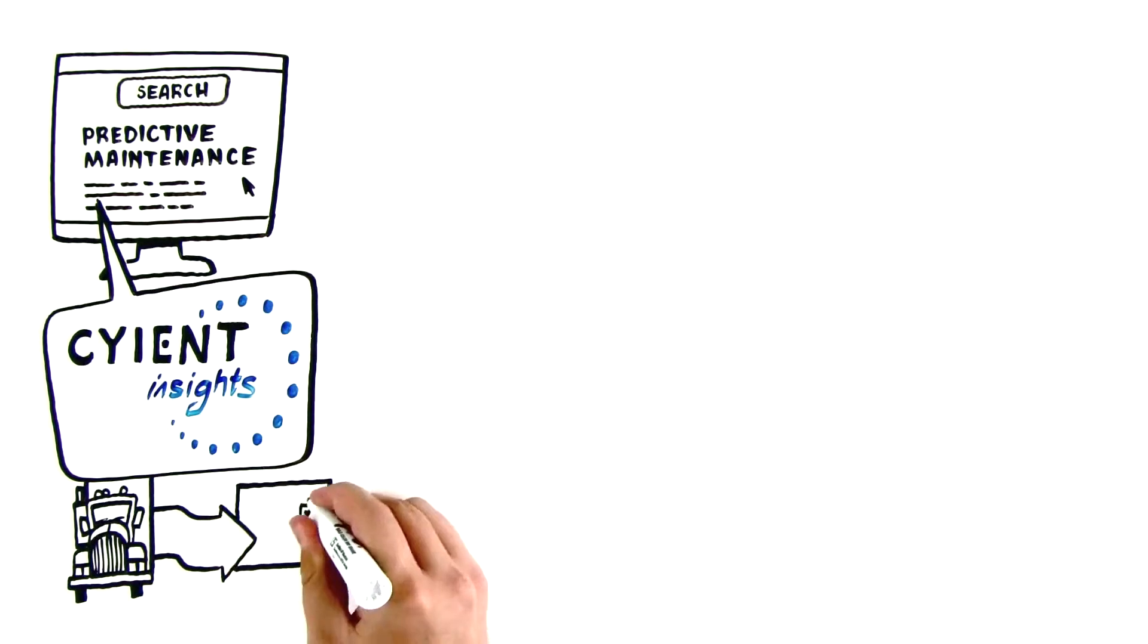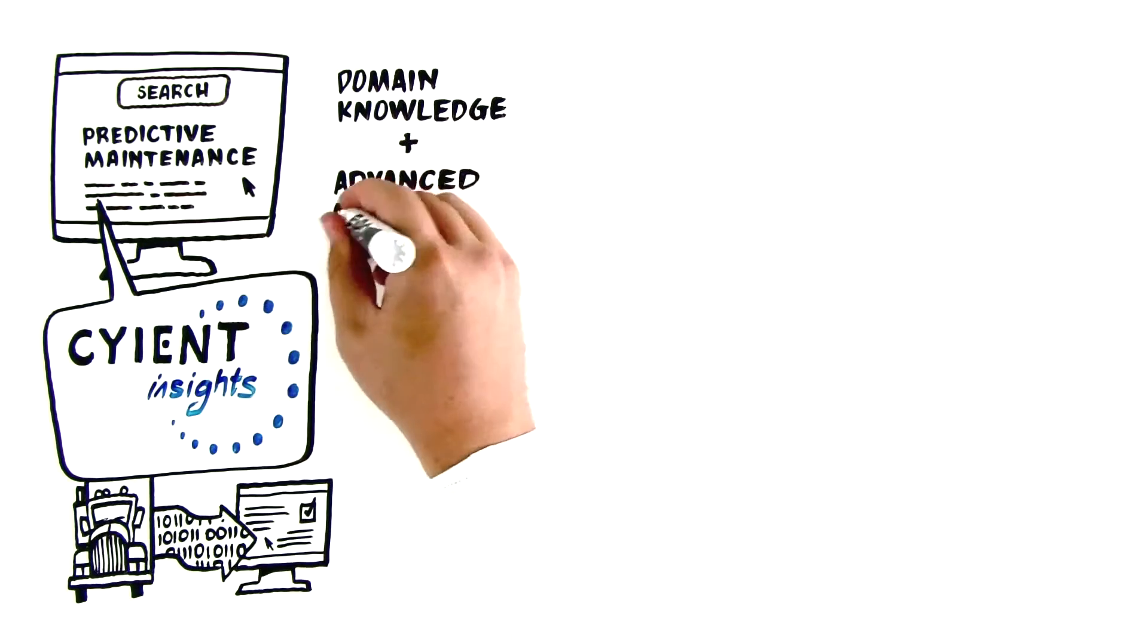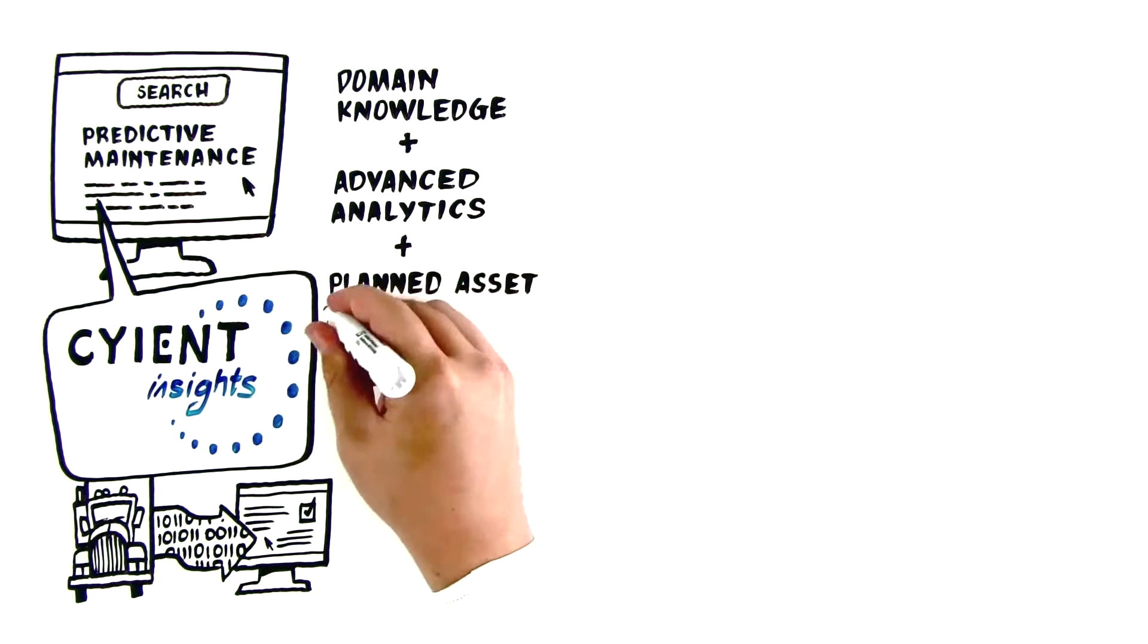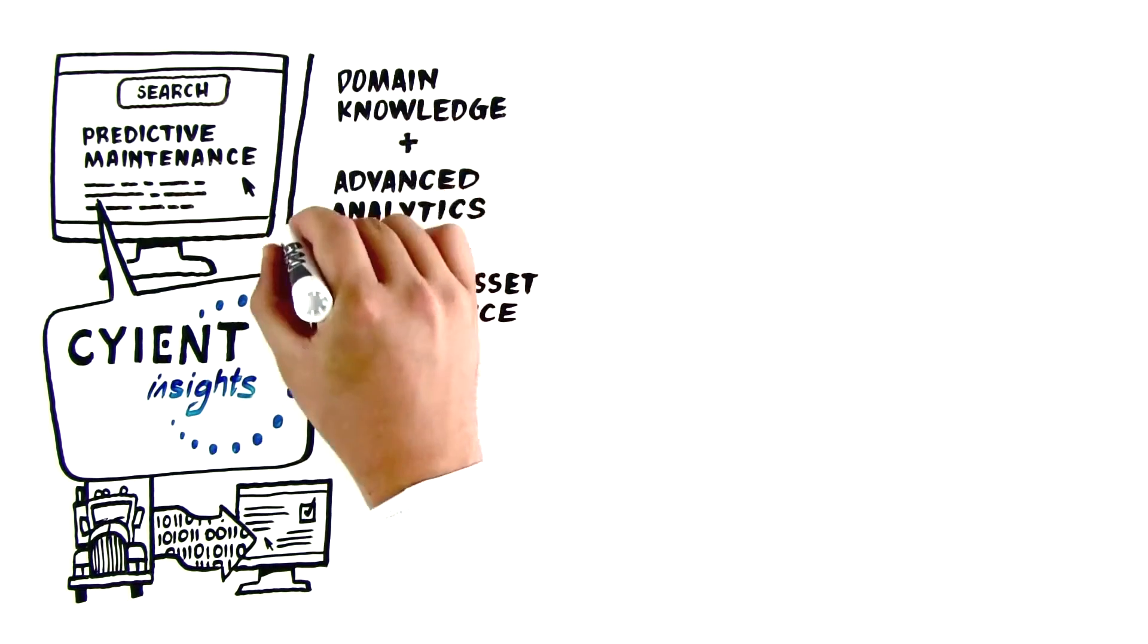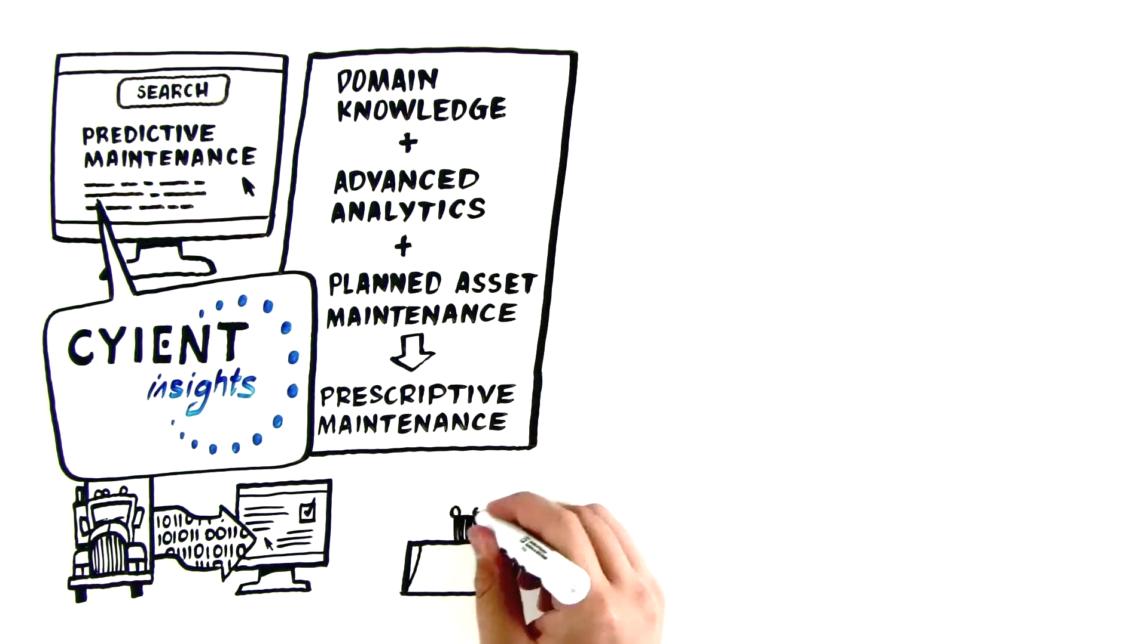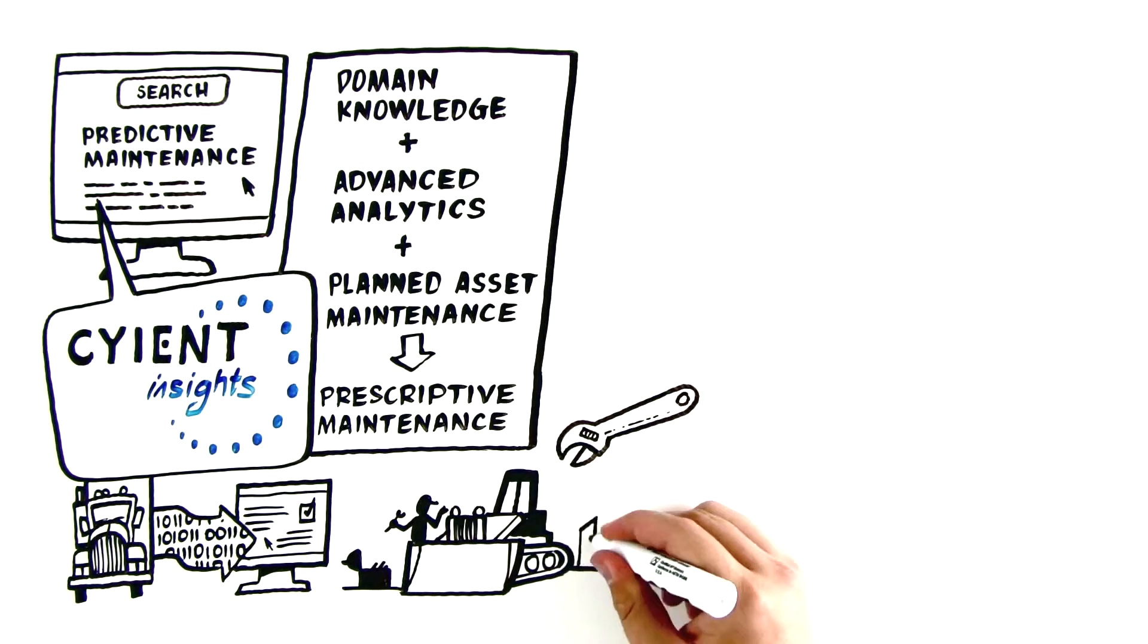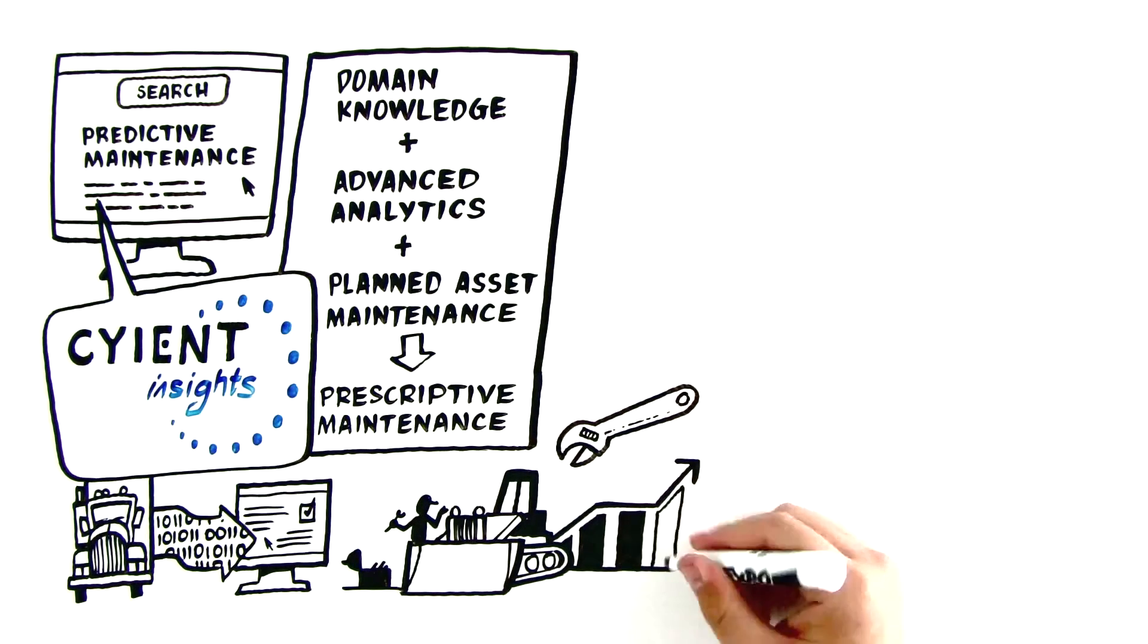Thanks to the world of data science and the age of industrial internet, Science Insights is able to combine domain knowledge with advanced analytics to take the idea of planned asset maintenance and solve your pain with prescriptive maintenance. Our process enables you to know far in advance when a piece of equipment or component is getting worn down and ready to fail, meaning you can replace it when the time comes, improving equipment uptime with little hassle and almost zero loss of production.